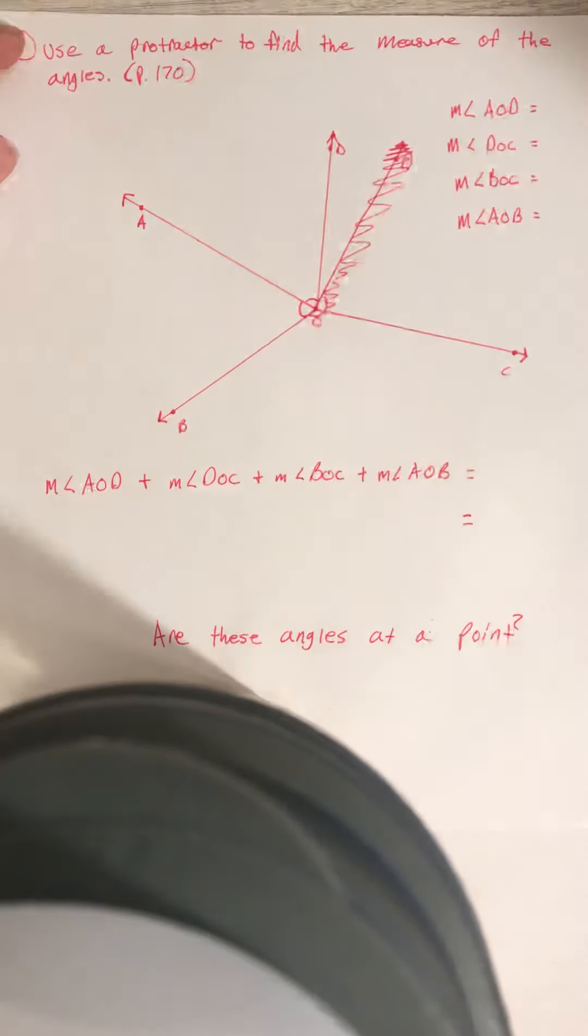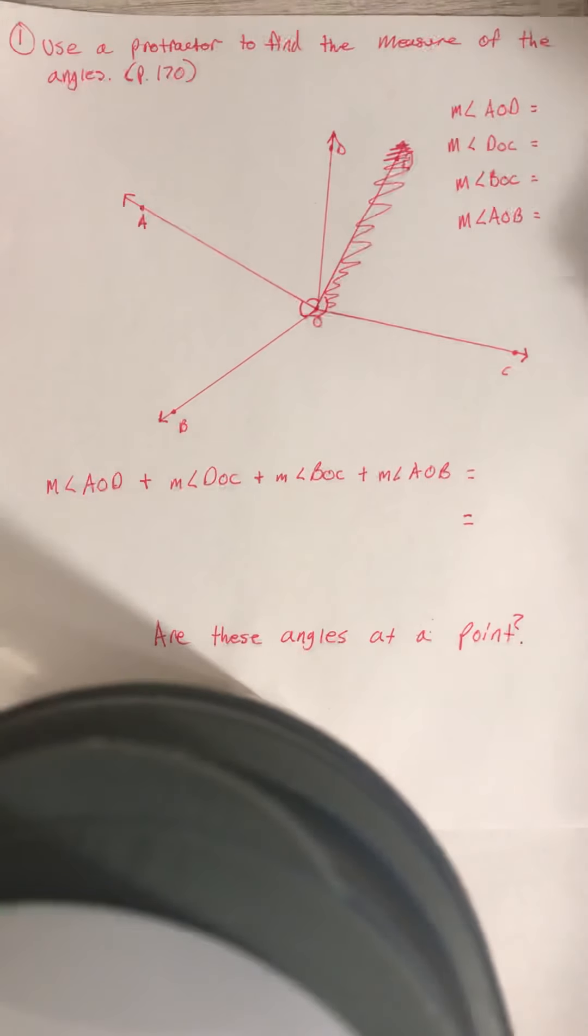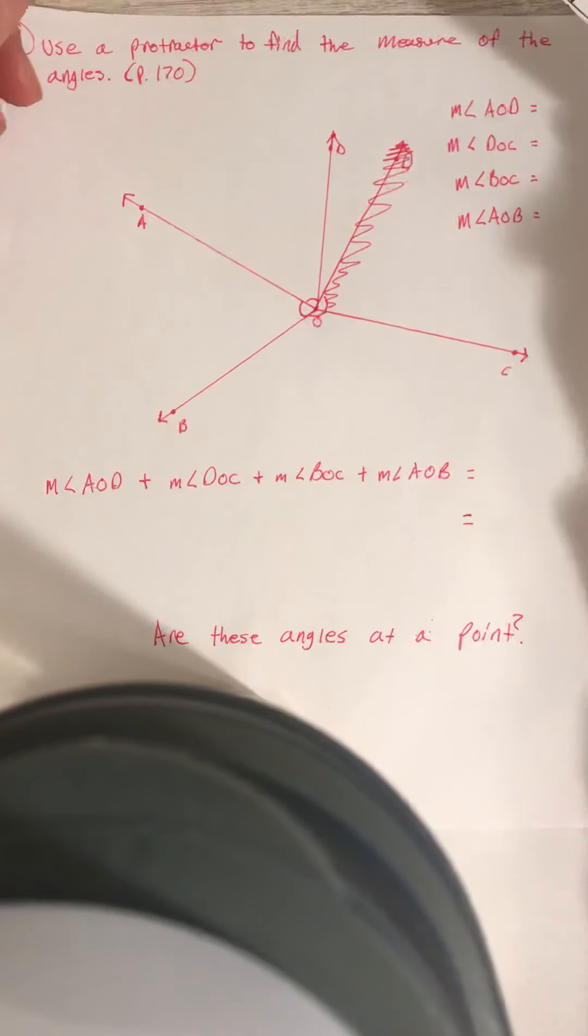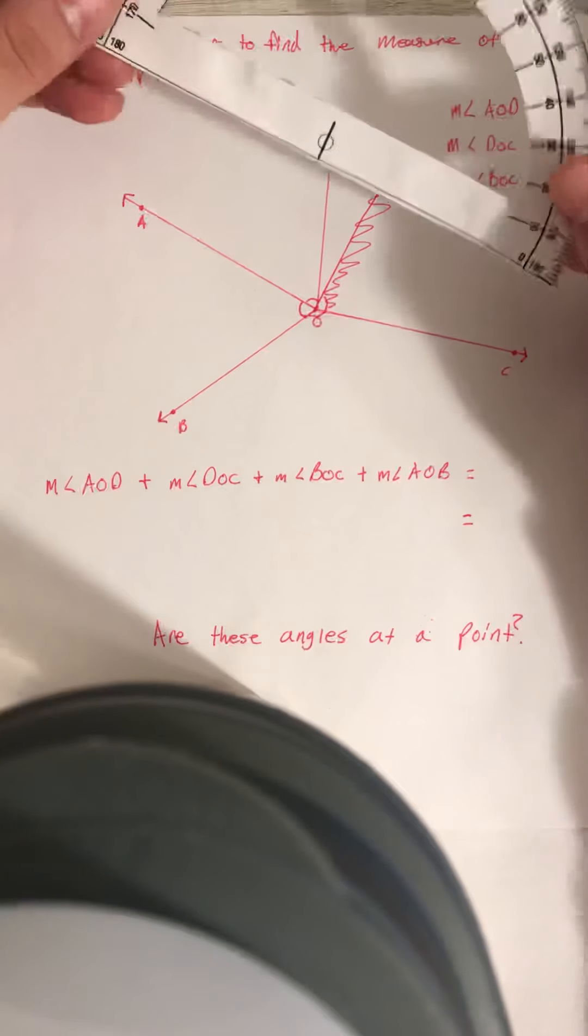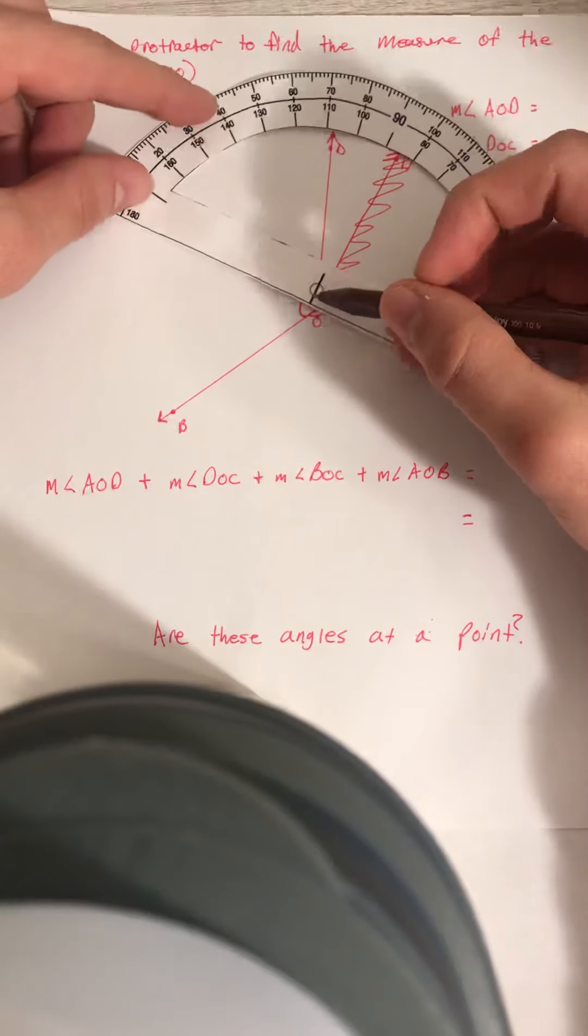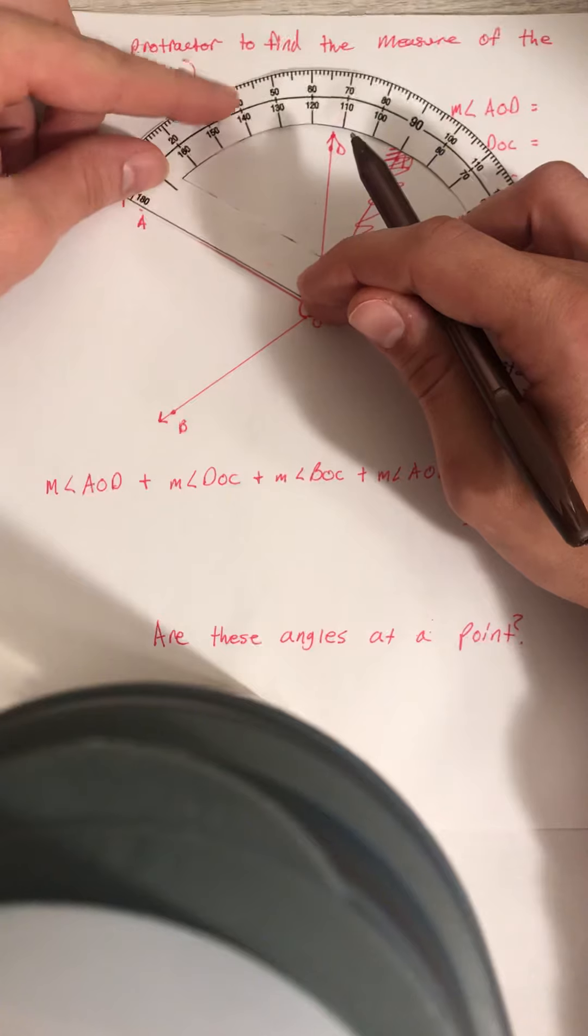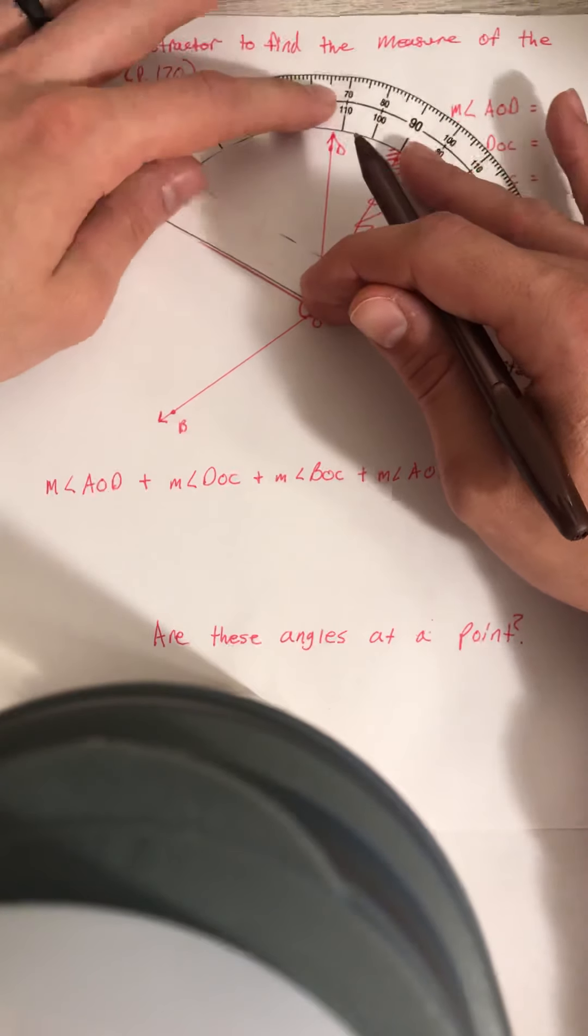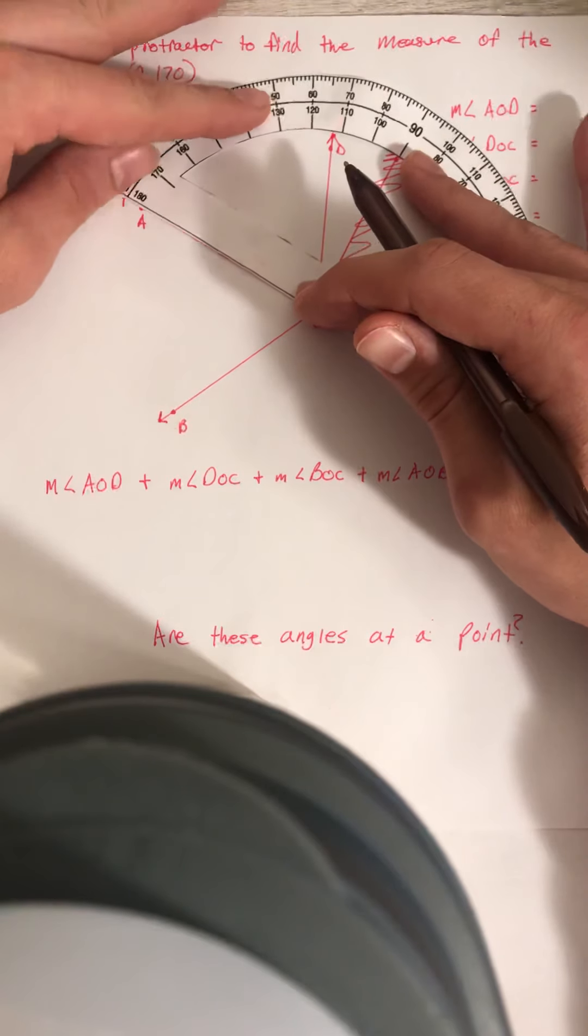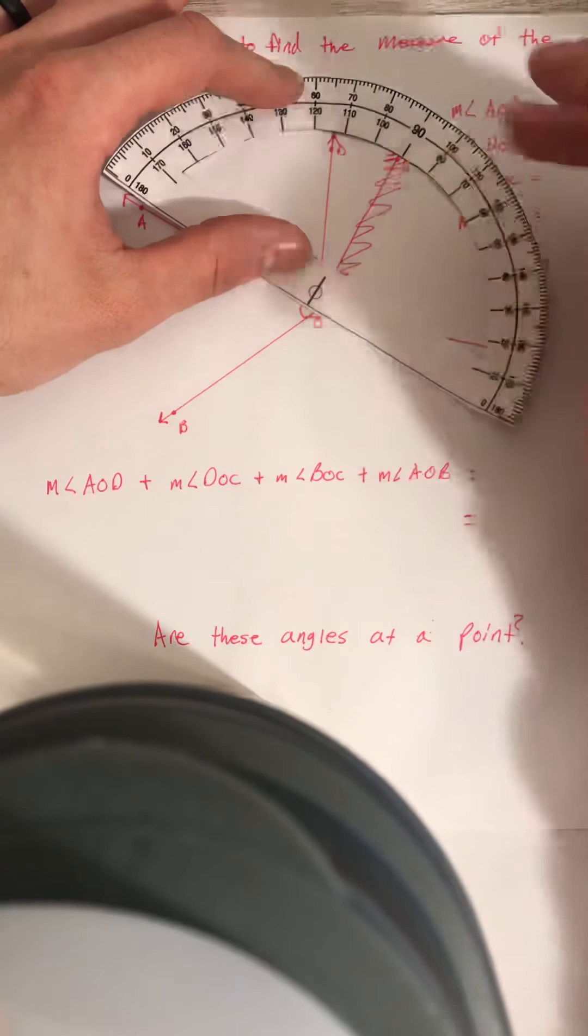I first need to use my handy dandy printed protractor to find angle AOD. And how I do that is just like if I was finding the angle off of a straight line, but I can do it in two different ways. So I'm going to put my midpoint of my protractor on the center angle going up the line. I need to make sure it's good and set. And I see that my measure of angle AOD looks like it's 65 degrees.